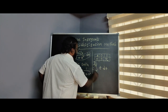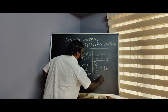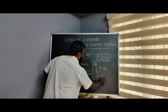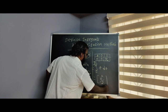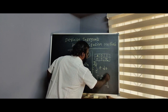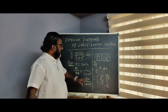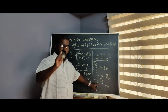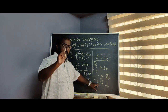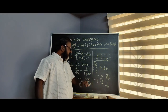Integrating t: integral of t is t squared by 2, using the formula t to the power n integrates to t to the power n plus 1 divided by n plus 1. So we get t squared by 2, evaluated from 0 to pi by 4.